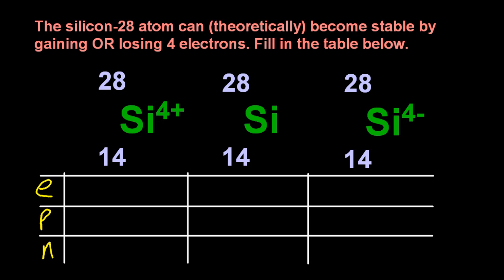So the smaller number, the atomic number, is always the number of protons. And the difference in the numbers is always the number of neutrons, for atoms or for ions.